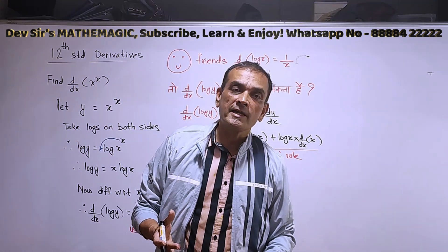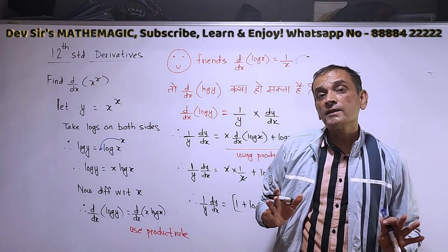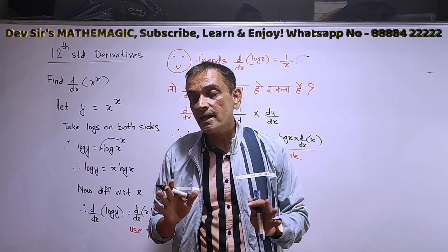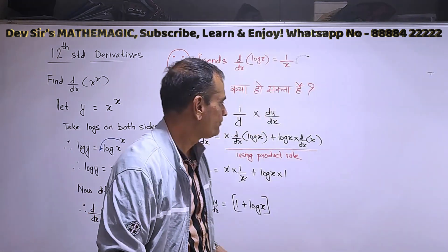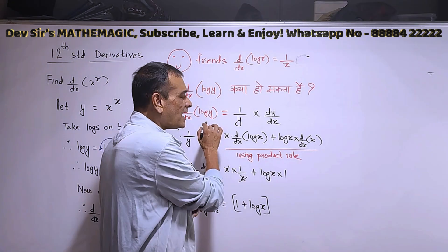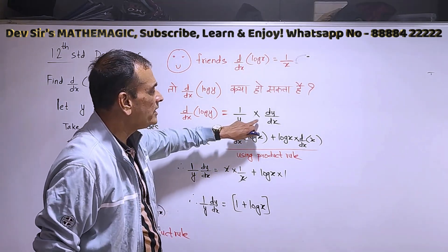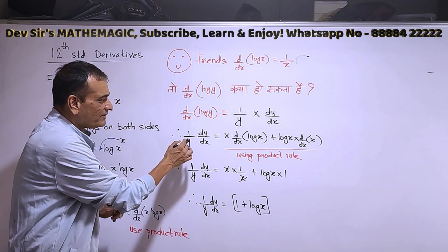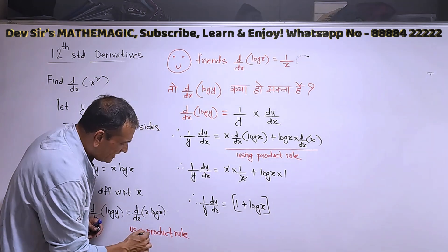So derivative of log y is 1 upon y into dy by dx. The method we are doing today is called logarithmic differentiation — this is one type in the 12th standard. Logarithmic differentiation means you take logs on both sides and then find the derivative. You take log whenever you get the type x raised to x, sin x raised to x, tan x raised to x, etc. Remember: d by dx of log y is 1 upon y dy by dx, by using the chain rule. On the left-hand side, d by dx of log y gives 1 upon y dy by dx. On the right-hand side, use the product rule.